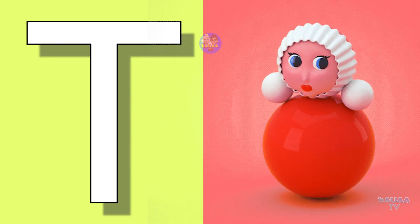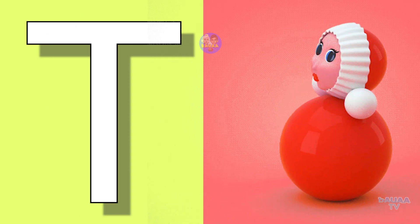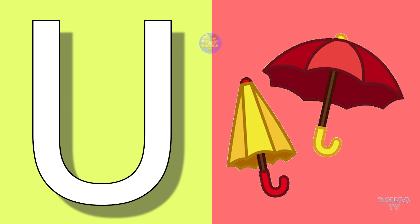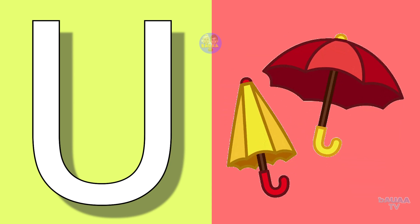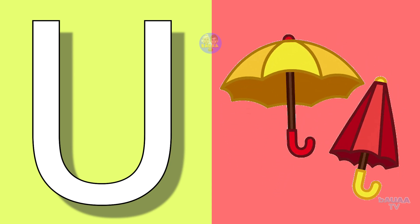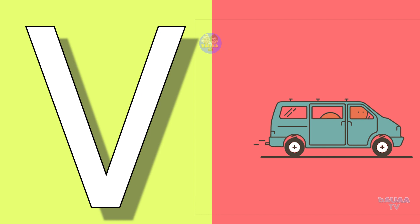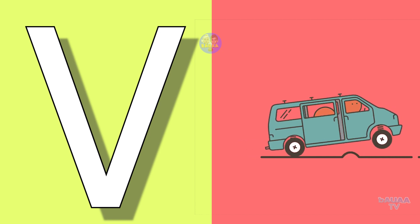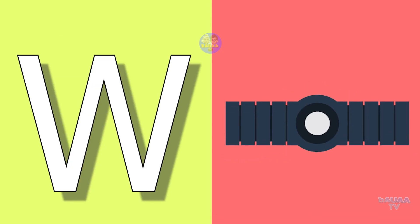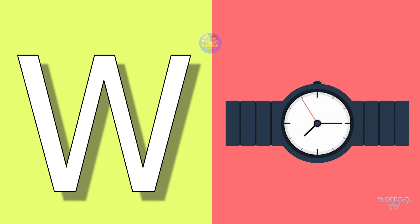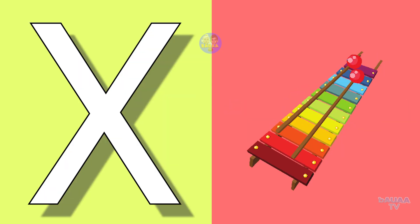T for toy, toy means khilona. U for umbrella, umbrella means chata. V for violet, violet means baingani. W for watch, watch means ghadi.